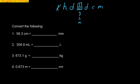This is kilo, this is hecto, this is deca, this is desi, centi, and milli. So what that means is you could have kilograms, you could have kiloliters, you could have kilometers.